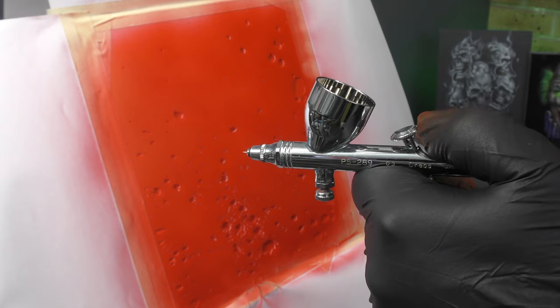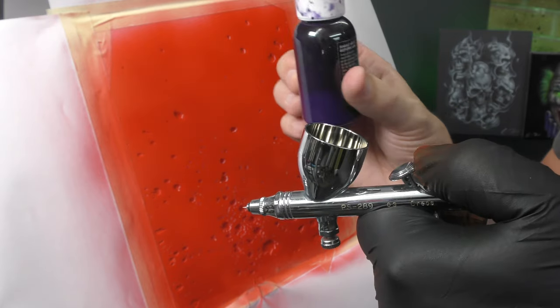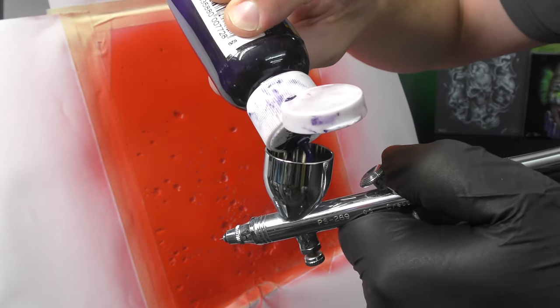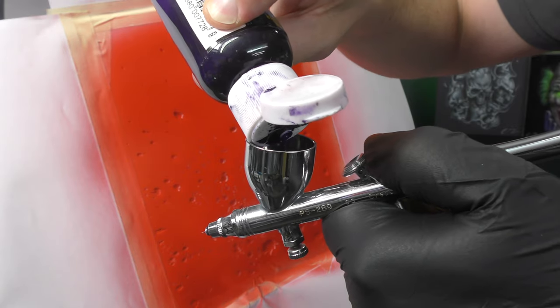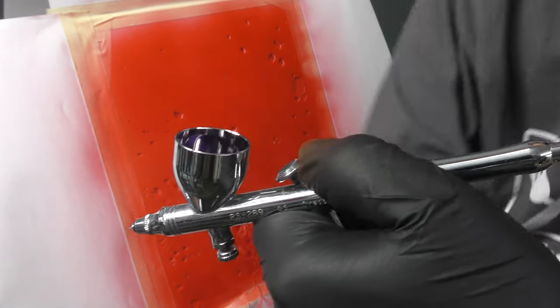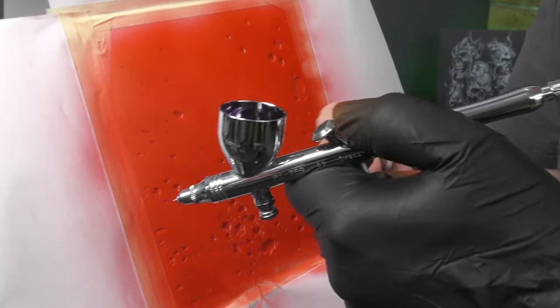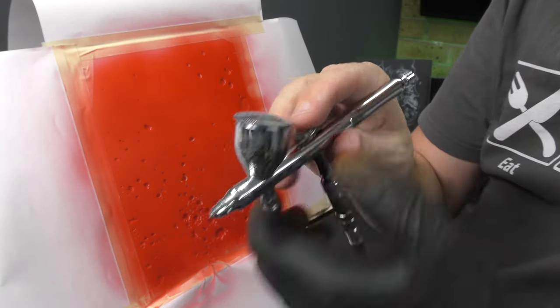So now I want the blood splatter to be a little bit more three-dimensional. So I'm going to use a bit of violet to shade it. Don't use black. Black's way too harsh. You should pretty much never shade with black unless it's like a black and grey illustration and then even so you want to thin it down quite a bit.